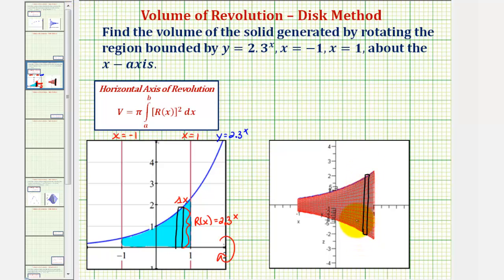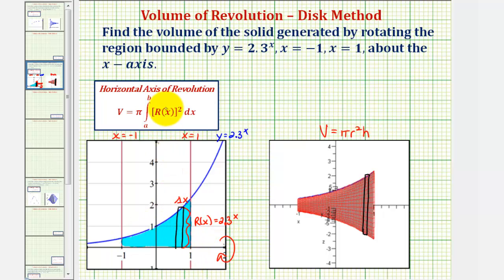Remember, if we were trying to find the volume of a right circular cylinder, we would use the formula V equals pi r squared times h. Looking at the volume formula given here, we can see this formula in our integral. We have the volume equals pi times the integral of R of x squared, integrated with respect to x from a to b. Here's the pi; R of x squared is the radius squared; and dx or delta x represents the height of the right circular cylinder.